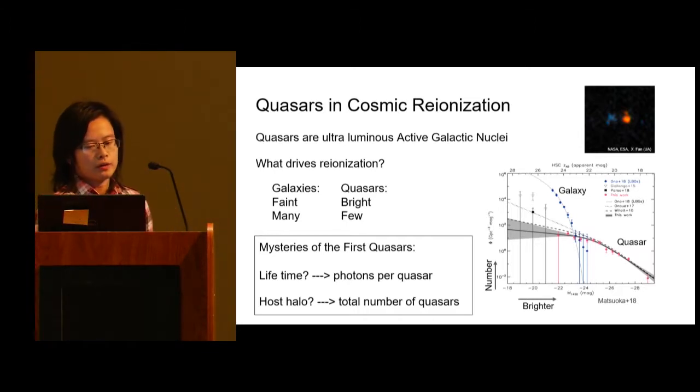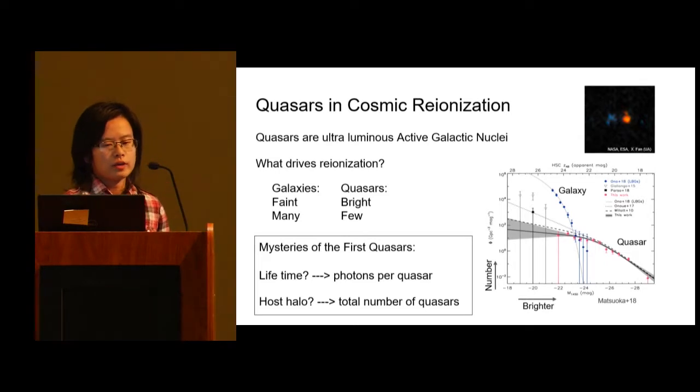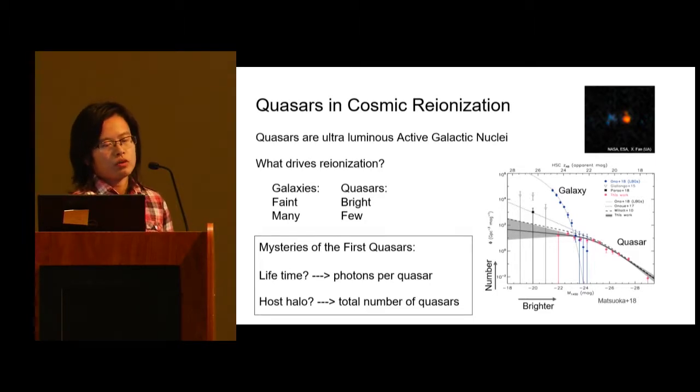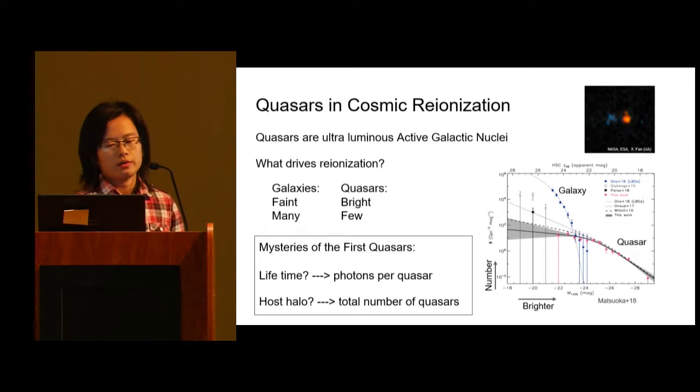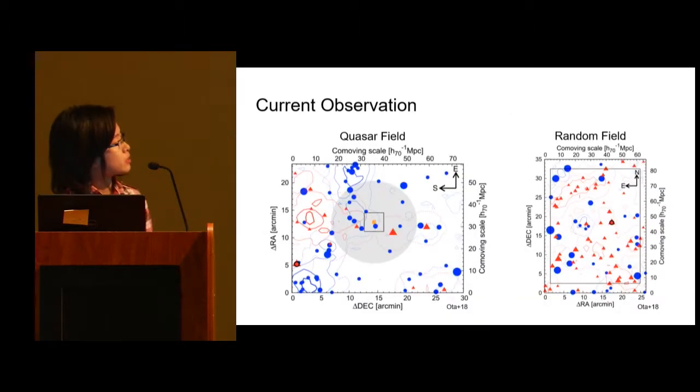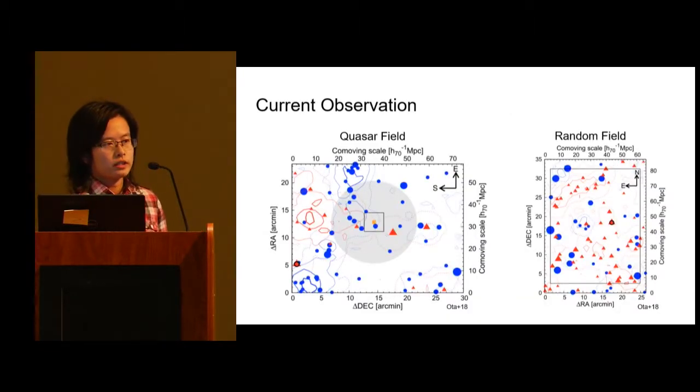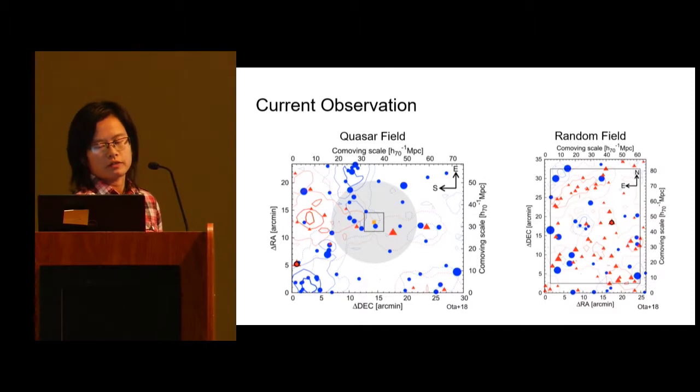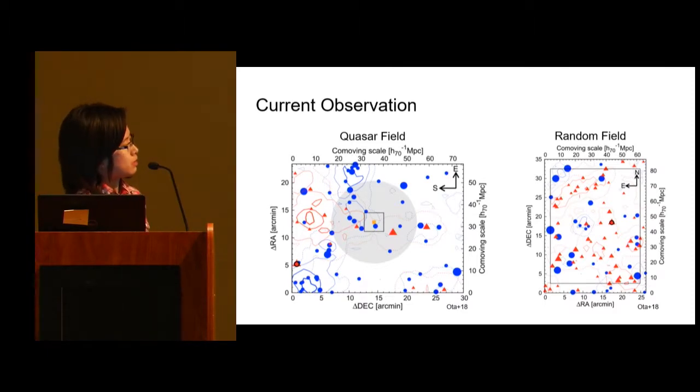One way to help us constrain the mass of the quasar host halo is to map their surroundings, for example, counting the galaxies around them. Because the more massive the quasar host halo is, the more dense the whole environment is. Here I show you some current observations from recent decades.